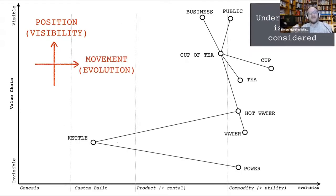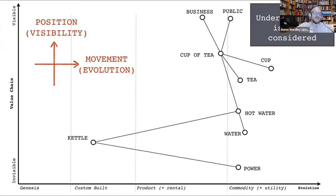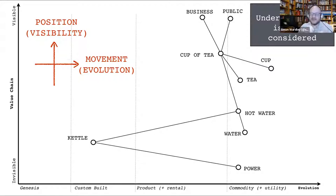Pretty much all forms of capital evolve through a common pattern: genesis of the novel and new, custom built, products, and then rental/commodity/utility services. So you place components where they should be — now you have anchor, position, and movement. It's not enough just to know the chain of connections; you need to understand the context — how things are being treated. Is the kettle custom built? Is power a commodity? This gives a common language to discuss the space with others.